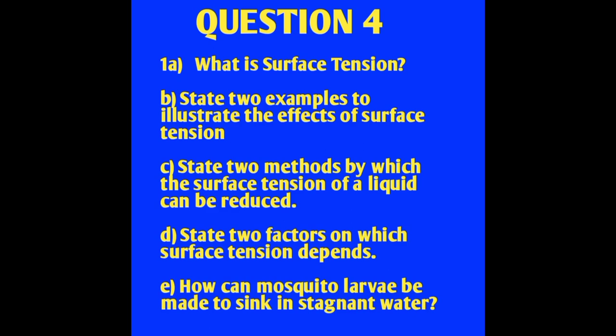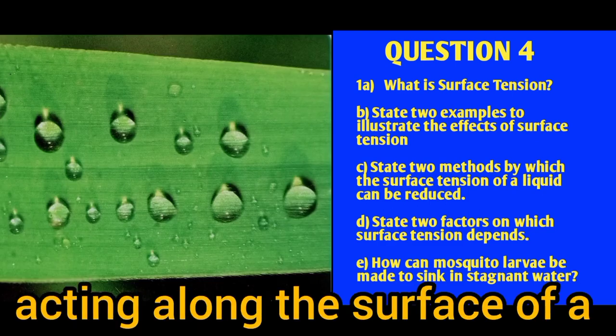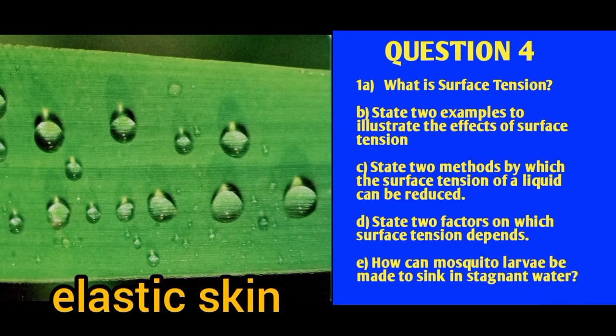Question four: What is surface tension? Surface tension is the force acting along the surface of a liquid, causing the liquid surface to behave like a stretched elastic skin. Examples illustrating surface tension: a needle gently placed on the surface of water; spilled mercury on a glass surface forms spherical droplets; soap bubbles form a spherical shape; and water skaters are able to walk on the surface of water as a result of surface tension.